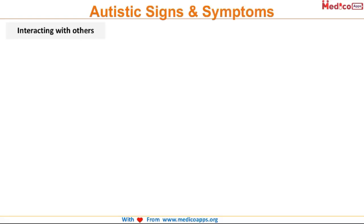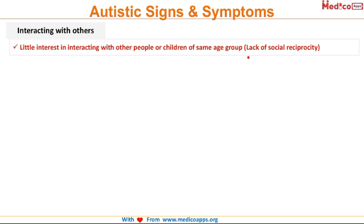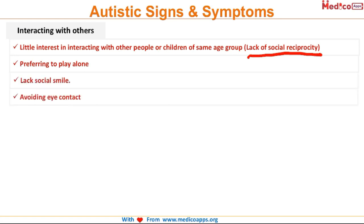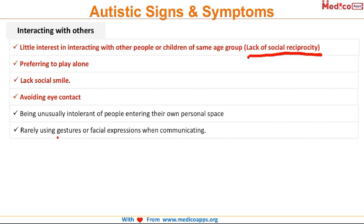Looking at the changes in interaction with others: the child shows little interest in interacting with other people or children of the same age group. This is called lack of social reciprocity, which is one of the core symptoms of autism. These children generally prefer to play alone, they lack social smile, they avoid eye contact, and they are unusually intolerant of people entering their personal space. Also, they rarely use gestures or facial expressions while communicating.